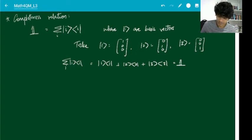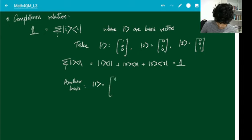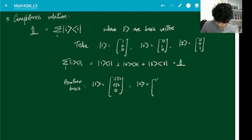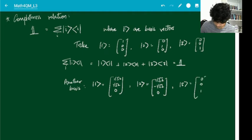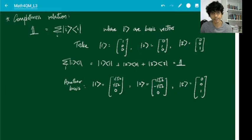This is almost trivial. Take one more basis: take this to be (1/√2, 1/√2, 0), then (1/√2, −1/√2, 0), and (0, 0, 1). For this also verify that when you take summation over ket i bra i, you recover the identity matrix.